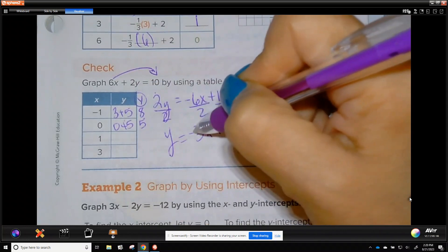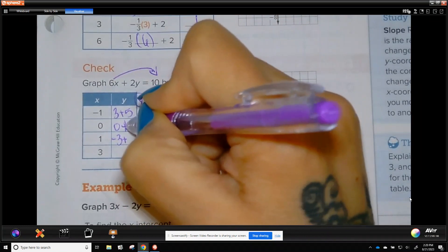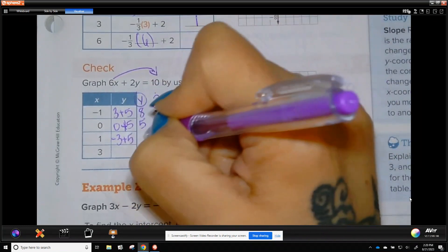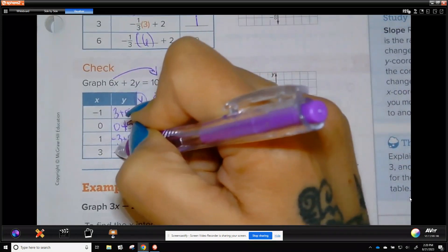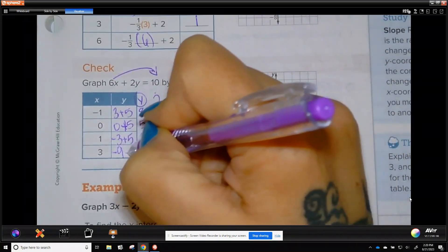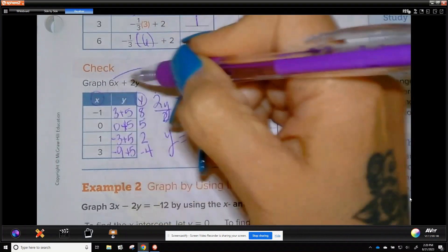1. Negative 3 plus 5. That's a plus. It looks like a 4. Is 2. And the last one, 3. Negative 3 times 3 is negative 9 plus 5 is negative 4.